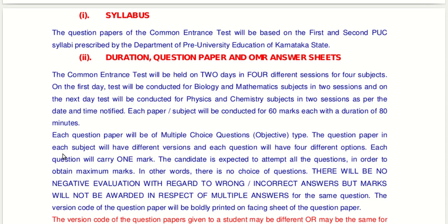The Common Entrance Test will be conducted on two days in four different sessions for four subjects. On the first day, there is biology and mathematics in two sessions, and on the second day, physics and chemistry in two sections. Each paper or subject will have 60 marks with a duration of 80 minutes. Each question paper will have multiple choice objective type questions.